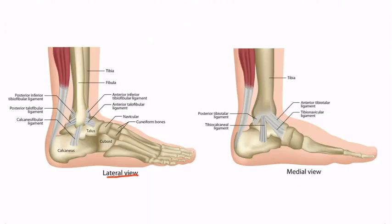Here we have a lateral view and a medial view of the ankle. Let's focus on the lateral view first. These ligaments are weaker than the medial ligaments, so they're much more commonly injured. The names of the ligaments are pretty straightforward if you understand the bones. The fibula is right here and the talus is right here, so the ligament that runs between these two structures is called the anterior talofibular ligament, or ATFL.